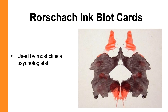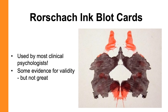Rorschach developed these cards specifically to be ambiguous, literally creating them by spilling ink onto paper and folding it in half to create symmetrical inkblot designs. When administering this test, you show the client the card and ask 'what might this be?' and write down everything they say they see — this could be movement, human or animal figures, animate or inanimate objects, or things they see in the whole inkblot or just parts of it. Several scoring systems for the Rorschach have been created incorporating these details, but none of them show the kind of validity and reliability you would get from an objective personality test.